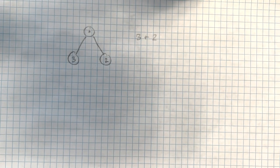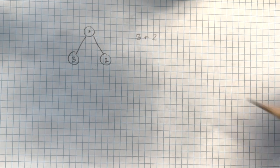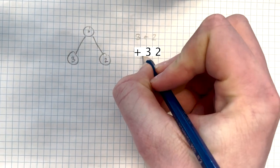In prefix, it's read root node first, then children left to right. Plus 3, 2.